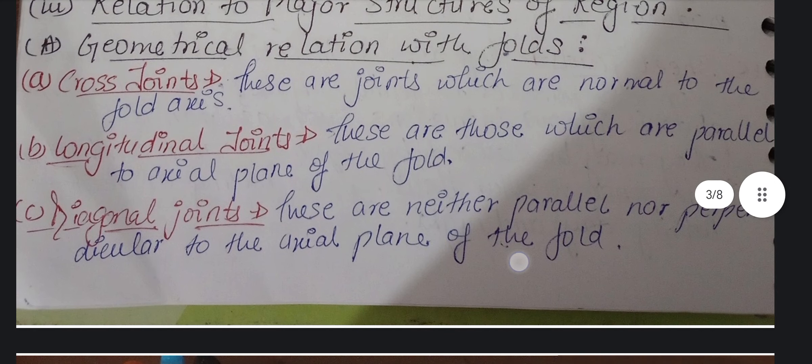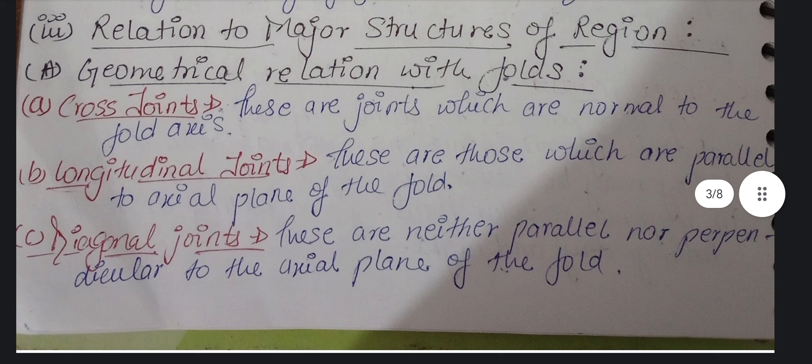Moving ahead to the relation with the major structure of the region. If we compare with the fold, what will the classification be? First, cross joints — these are the joints which are normal, meaning perpendicular, to the fold axis. Folds are wave-like undulations on the earth's surface, and cross joints are perpendicular to their axis.